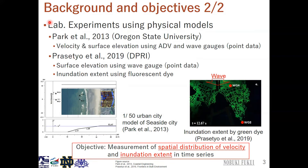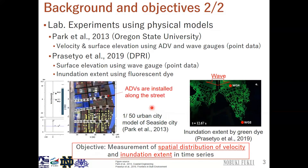Our first example is Park et al. 2013. This experiment was done at Oregon State University. They introduced a 1/50 scale diversity model of the city. They introduced ADVs along the street and wave gauges were also introduced. They measured the water surface elevation as point data.